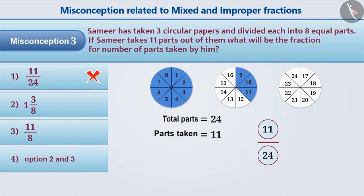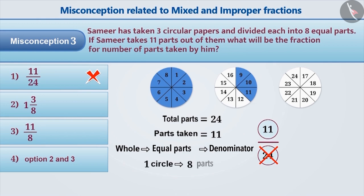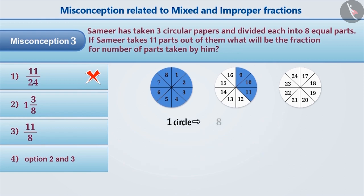This is an incorrect way. The mistake is in understanding the correct meaning of denominator. The number of equal parts into which the whole is divided is the denominator. Here, one circle is divided into 8 equal parts, therefore 8 is the denominator. Samir has divided each circular paper into 8 equal parts, so we can say that one whole is formed from 8 parts.